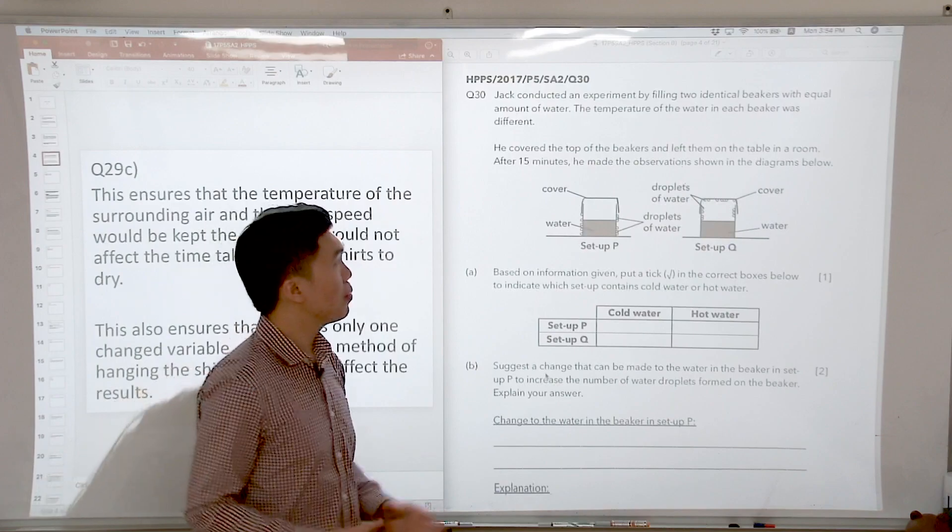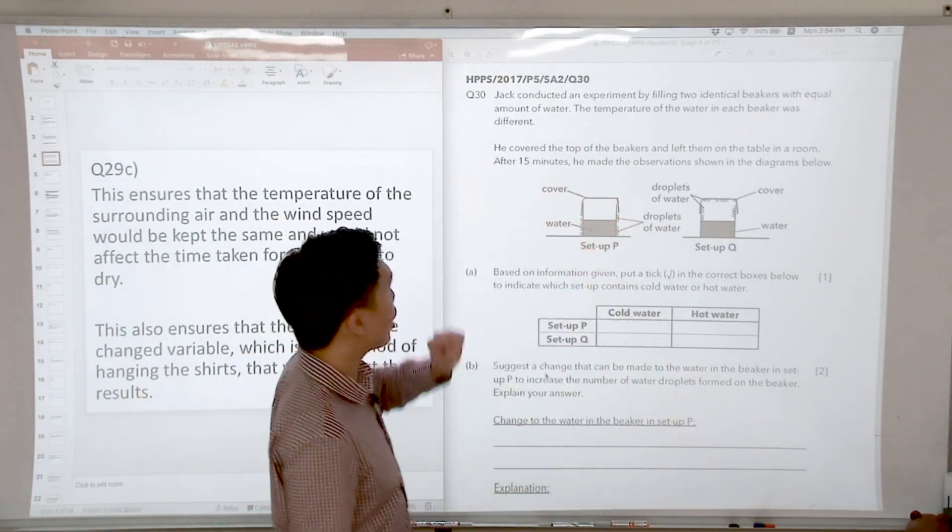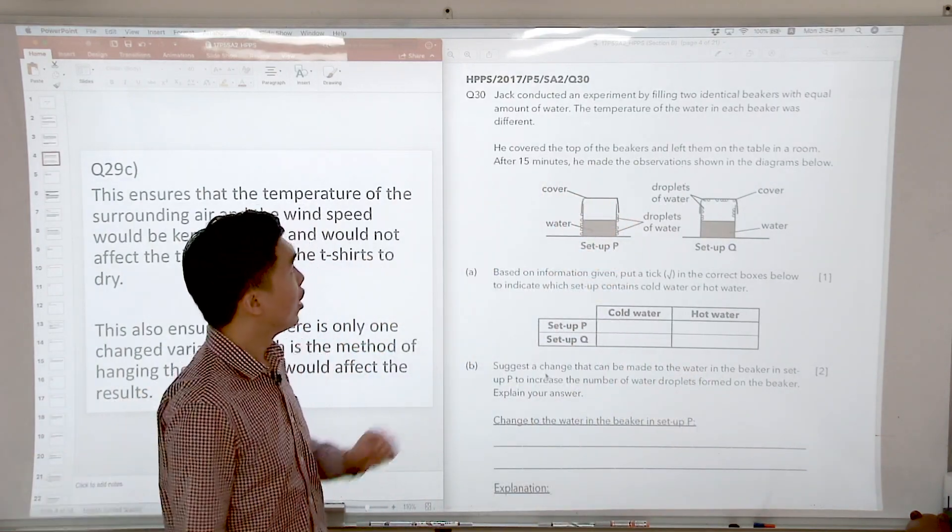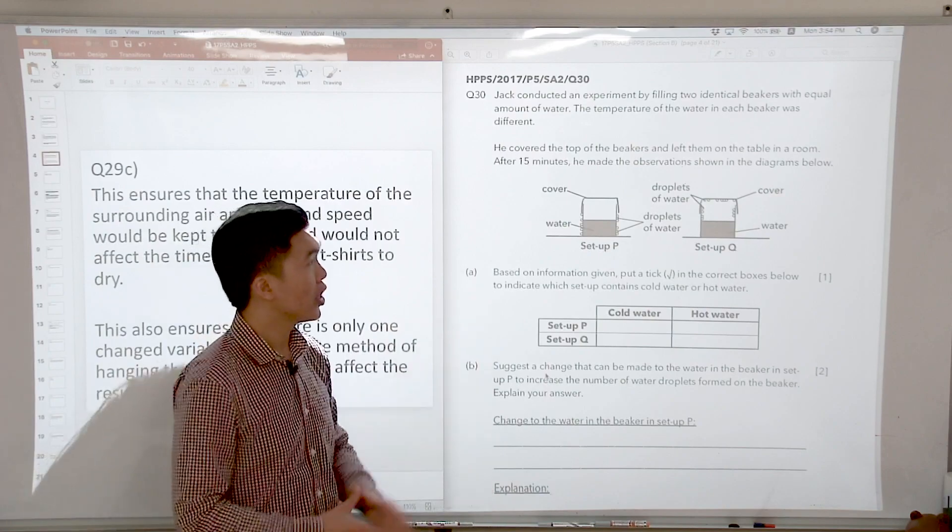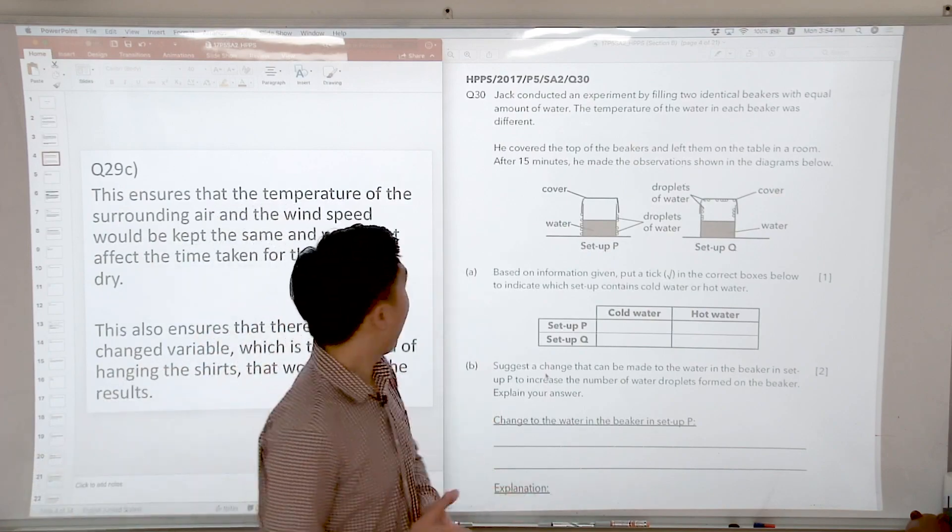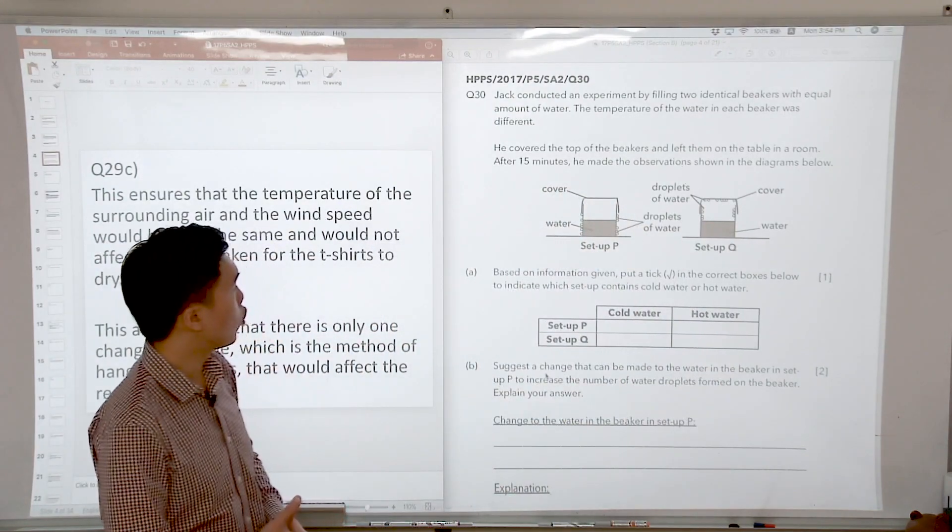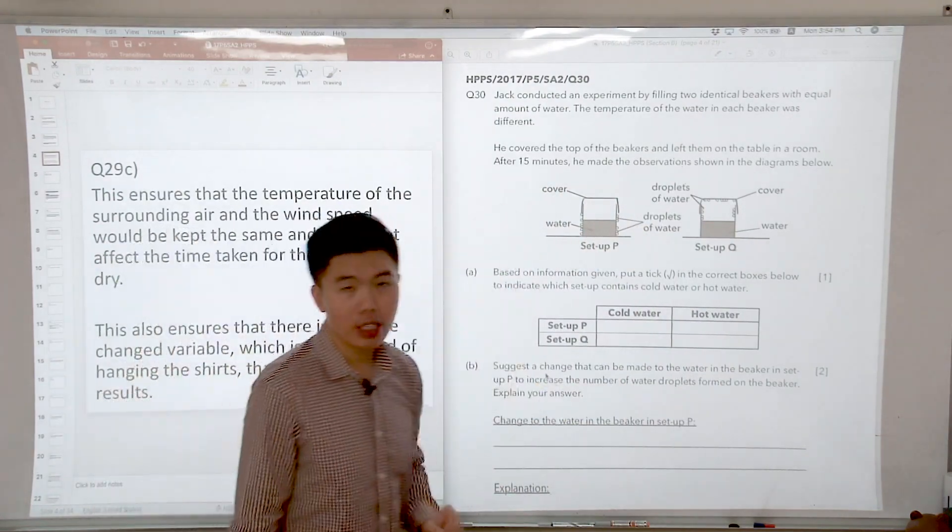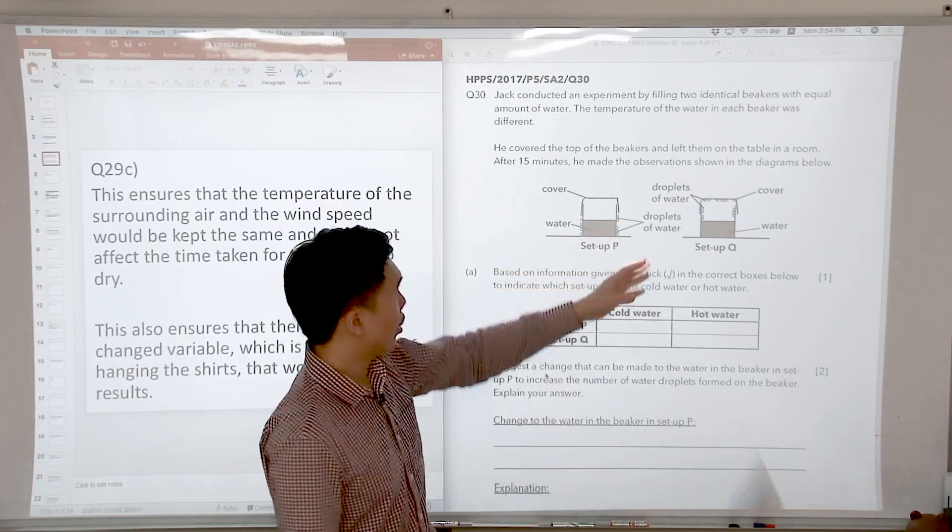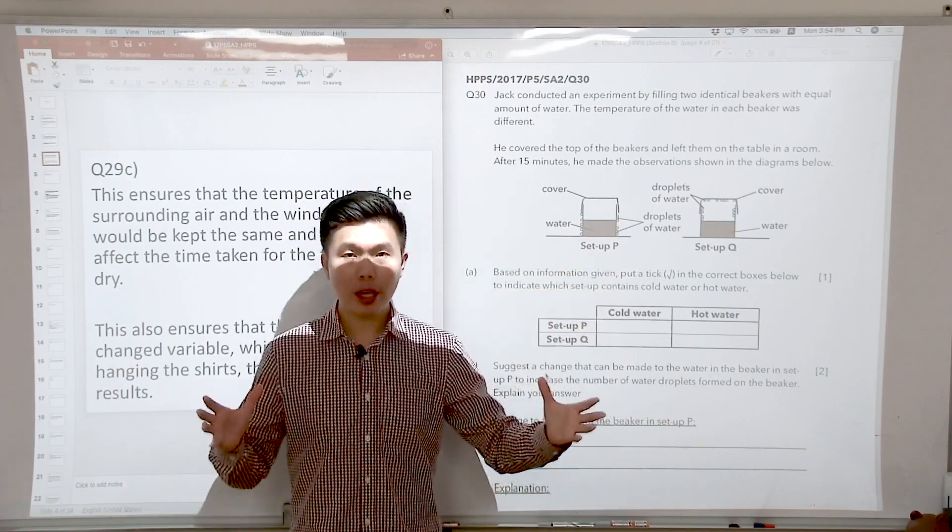Jack conducted an experiment by filling two identical beakers with equal amounts of water. The temperature of the water in each beaker was different and he covered the top of the beakers and left them out on the table in a room. After 15 minutes he made certain observations shown in the diagrams.